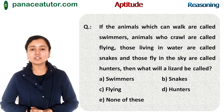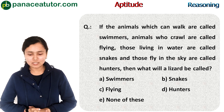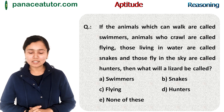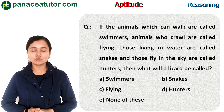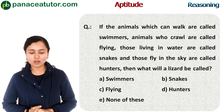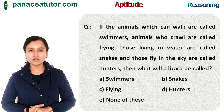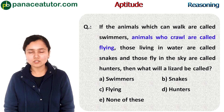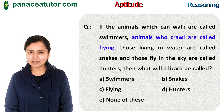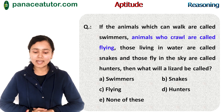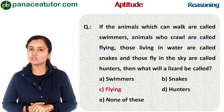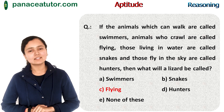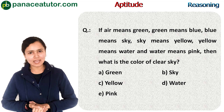Next question: If the animals which can walk are called swimmers, animals who crawl are called flying, those living in water are called snake, and those that fly in the sky are called hunters — then what will the lizard be called? Lizards are creatures who crawl, and the question clearly states animals who crawl are called flying. So our answer is flying, that is option C.